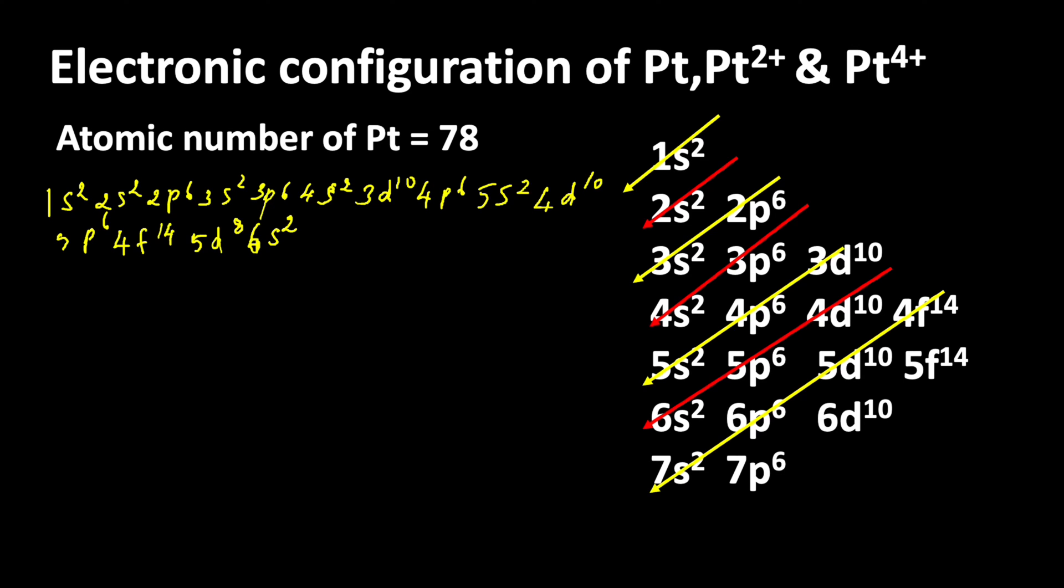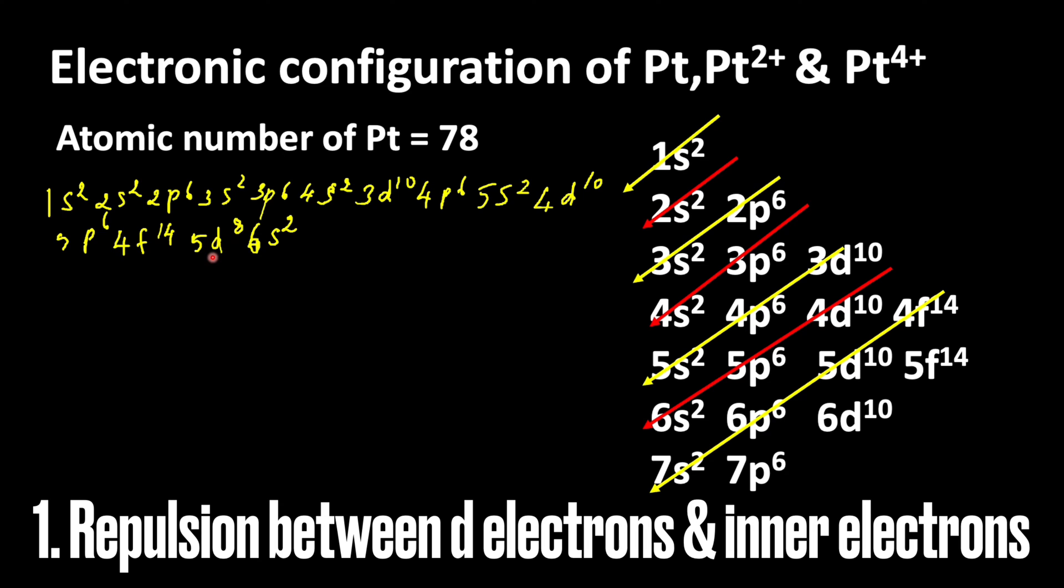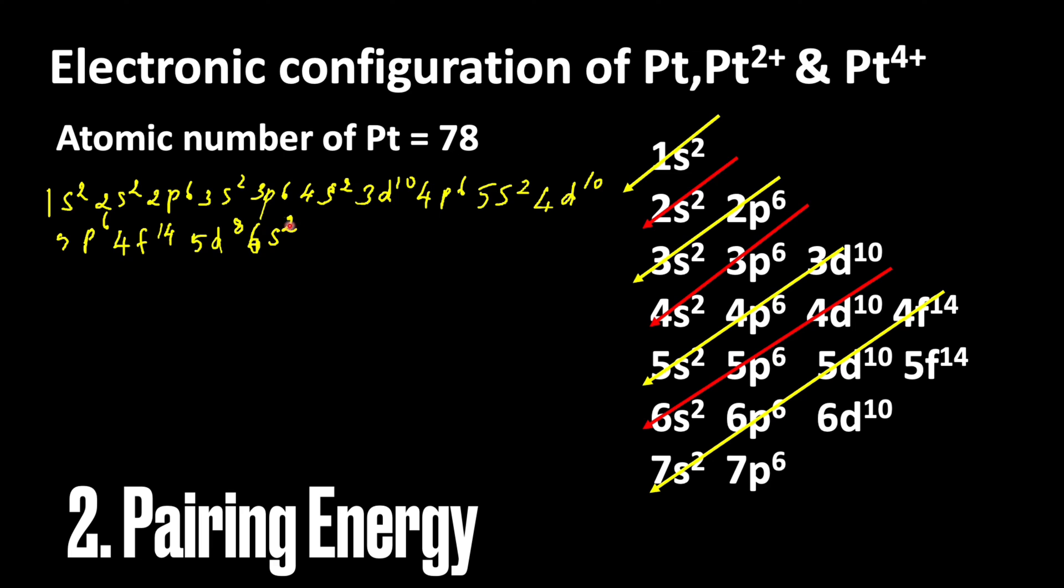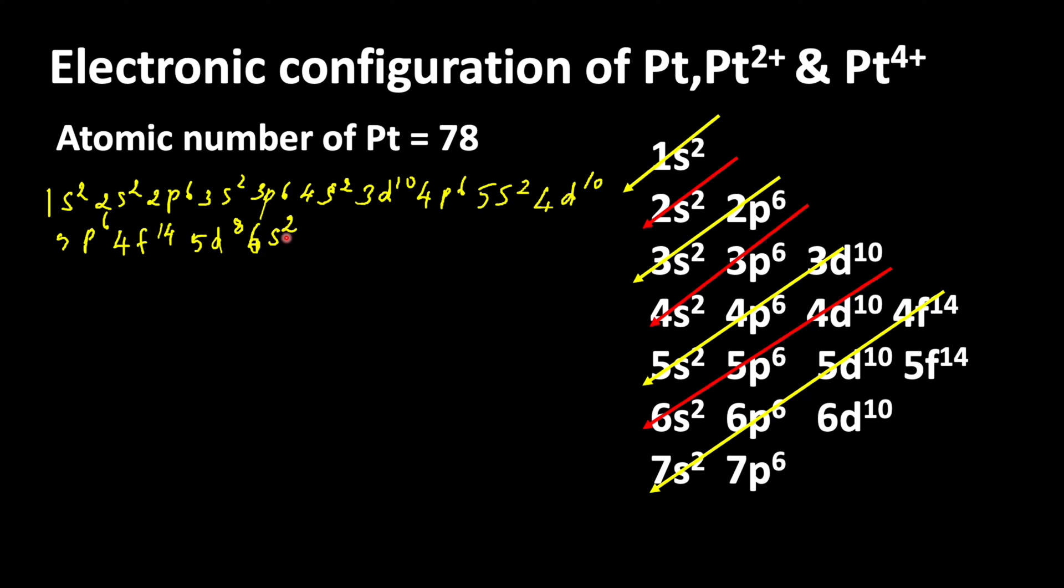But this is not the correct electronic configuration of platinum. Whenever we write electronic configuration, we should also think about the stability of an atom. In platinum, there is the presence of f orbitals. The shielding effect of f orbitals is very poor when compared to d and p and s orbitals. Because of that, there is interaction between d orbitals and the inner nucleus. At the same time, there is more repulsion between the 5d electrons and the inner electrons. We should also think about pairing energy. So to avoid the energy and due to the poor shielding effect of f orbitals, one of the electrons from s orbital moves to d orbital and makes it 5d⁹.